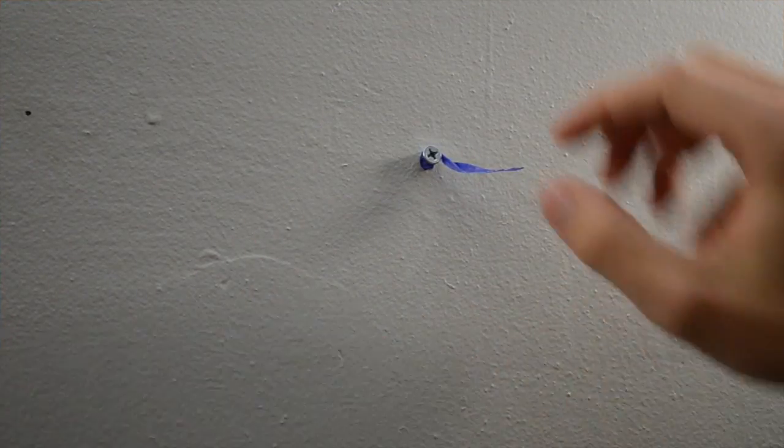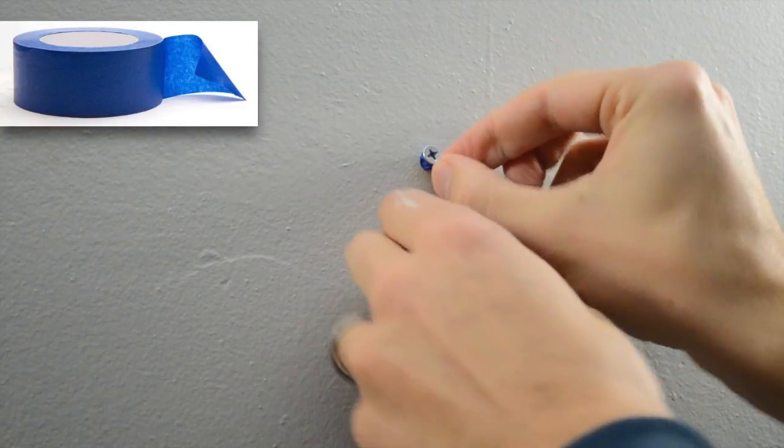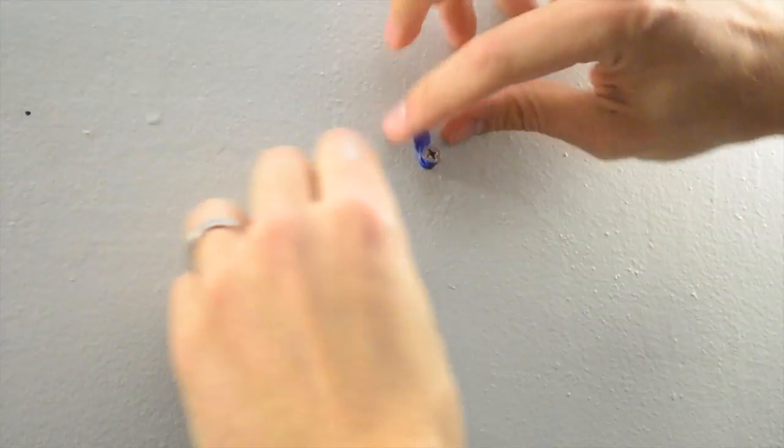My picture is still just a little bit off so what I've done is I've taken some of that painter's tape and made a slight piece of it and I'm wrapping it around the screw on the wall.